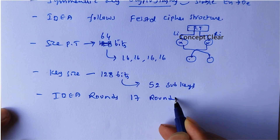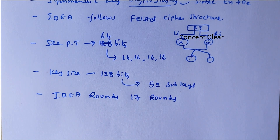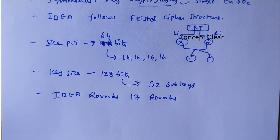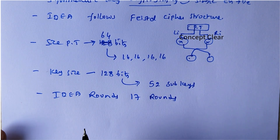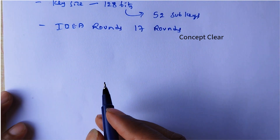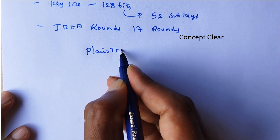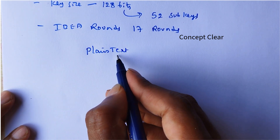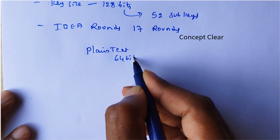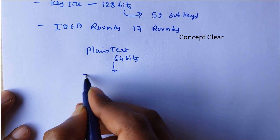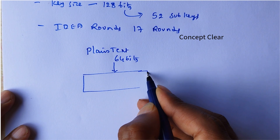It is not like previous algorithms such as DES, AES, and Blowfish — here it is different. Looking at the block diagram of the IDEA algorithm: we take a plain text of 64 bits, and that will be divided into 4 subparts.